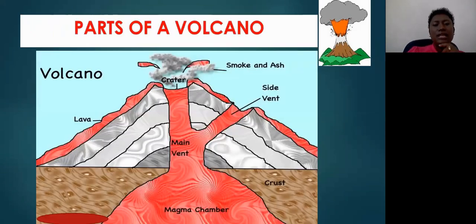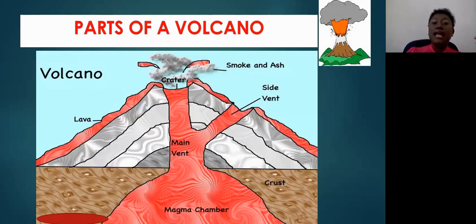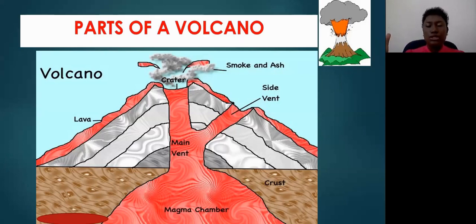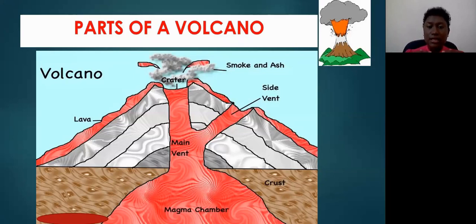Here I am showing you a diagram outlining the parts of a volcano. If you were to take a trip inside a volcano, you would see a huge chamber or cavity called the magma chamber. Notice its location — it is found beneath the Earth's crust. It is like the belly of the volcano, where the majority of the magma, that liquid rock, is stored.